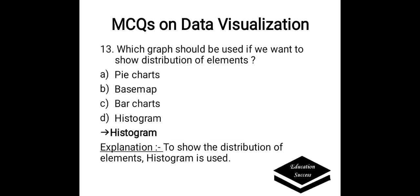Which graph should be used if we want to show distribution of elements? Options are: A. Pie chart, B. Basemap, C. Bar chart, D. Histogram. Correct answer is Histogram. To show the distribution of elements, Histogram is used.